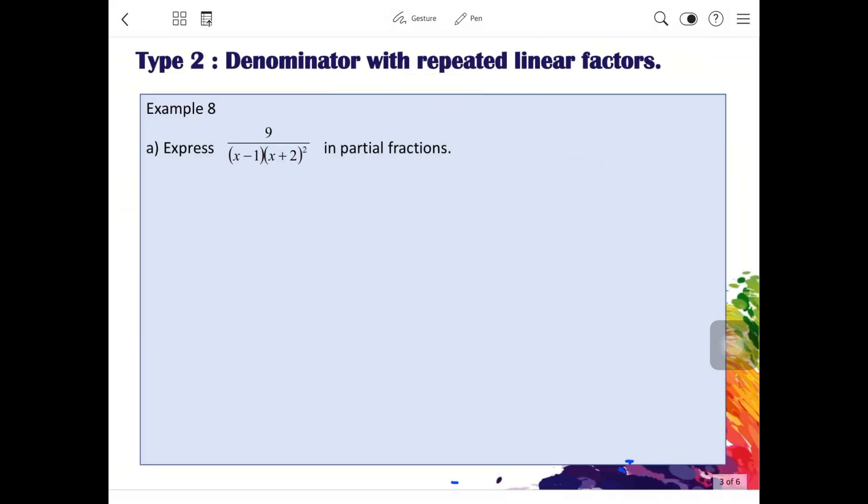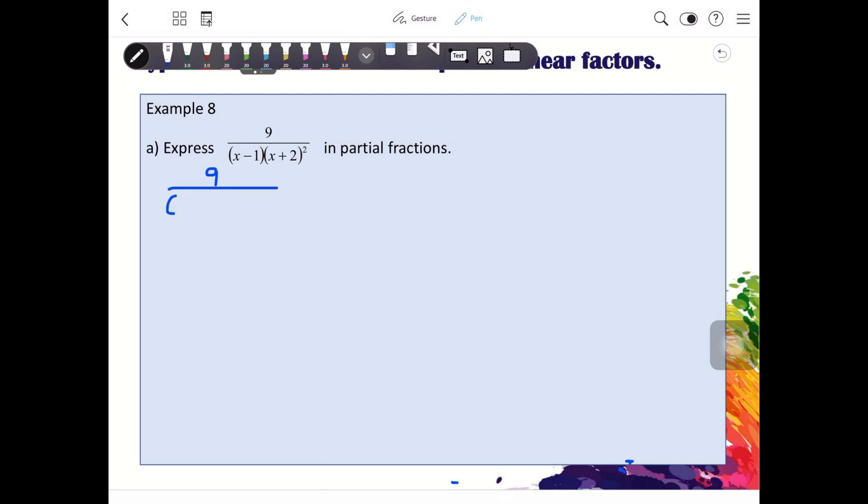Let's look at one example here. For example 8, we have 9 over x minus 1, x plus 2 bracket squared. According to the note, we are going to do A over x minus 1 plus B over x plus 2 plus C over bracket x plus 2 squared.